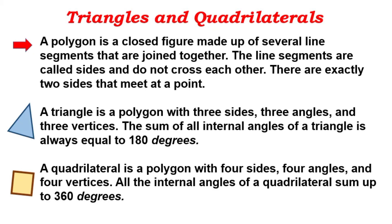A polygon is a closed figure made up of several line segments that are joined together. The line segments are called sides and do not cross each other. There are exactly two sides that meet at a point.